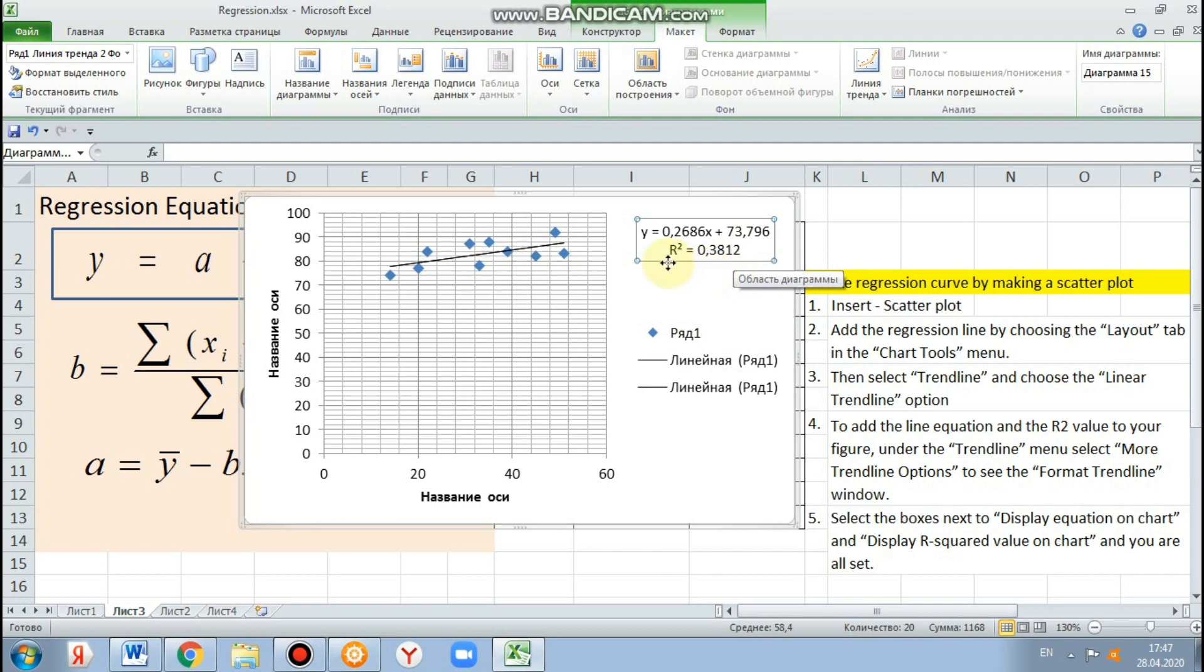R squared is a statistical measure of how close the data are to the fitted regression line. It is also known as the coefficient of determination. R squared is always between 0 and 100%.